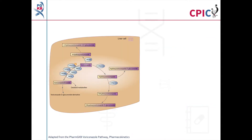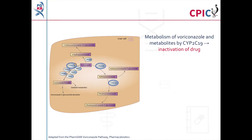This image is adapted from the PharmGKB voriconazole pathway. A link to the original pathway is provided in the description below this video. Voriconazole is metabolised by liver enzymes, including CYP2C19, to form a number of metabolites. This metabolism inactivates voriconazole.